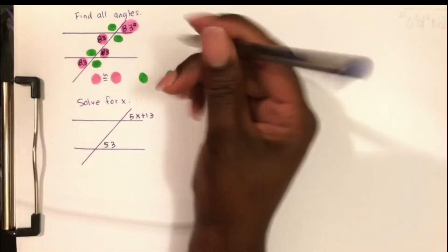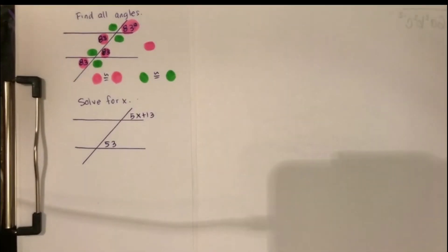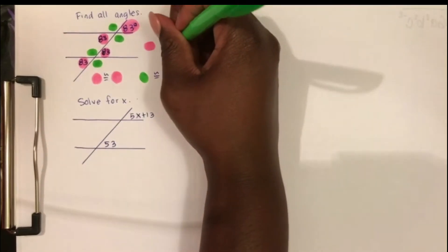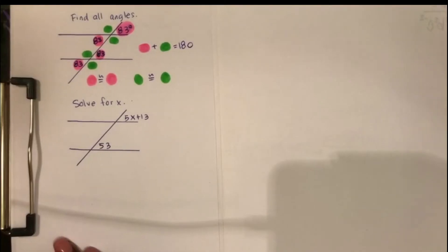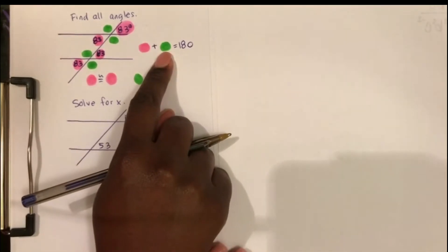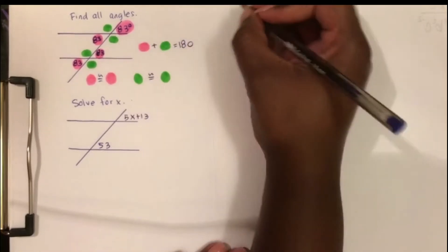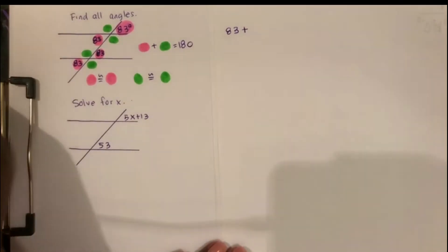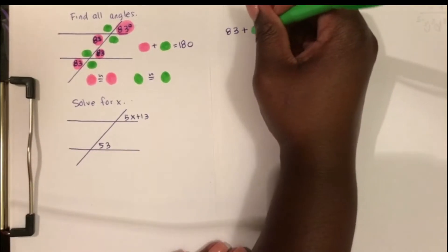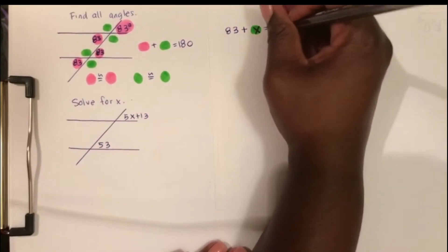Something you should know about these two colors we've used: if we were to add one of the pink angles to one of the green angles, their sum would be equal to 180 degrees. So to figure out the measure of the green angle, I'm going to plug in the information I already have. The pink angle is equal to 83, and the green angle we could call x.